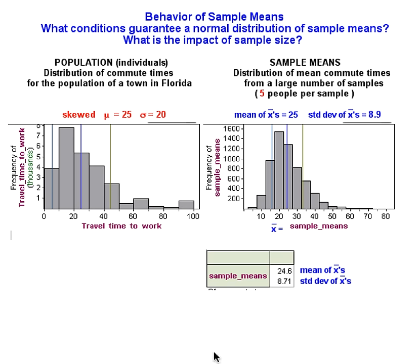Let's see what happened. Did you predict correctly? It looks like the sample means, when we use 5 people per sample, have a skew to their distribution. We also can see that the mean of the sample means should be about 25 — it actually was 24.6 when I calculated it. The standard deviation of sample means should be about 8.9 according to theory; it was about 8.7 when I actually calculated it. Now we're going to see what happens as we increase the sample size.